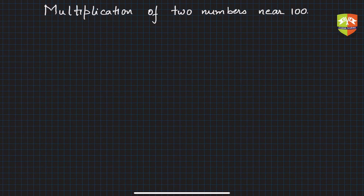Numbers near 100 mean like 97, 98, or even 85, which is not that far from 100. On the other side as well, you can have 101, 107, or 112. How far you can go depends on how much tables you have already remembered.